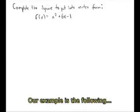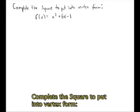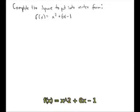Our example is the following. Complete the square to put into vertex form f of x equals x squared plus 6x minus 1.